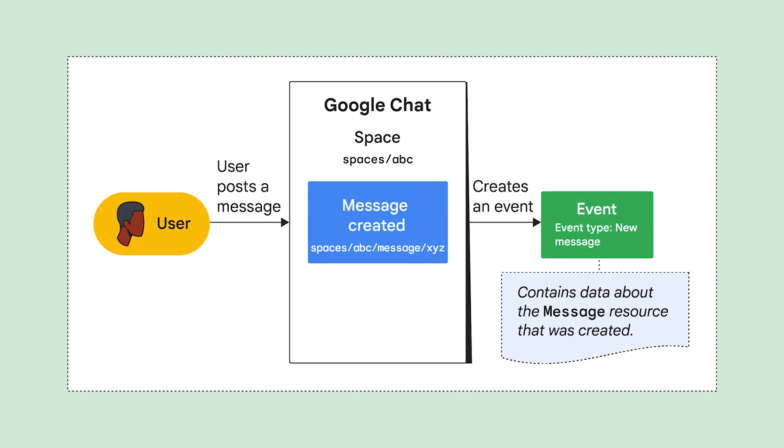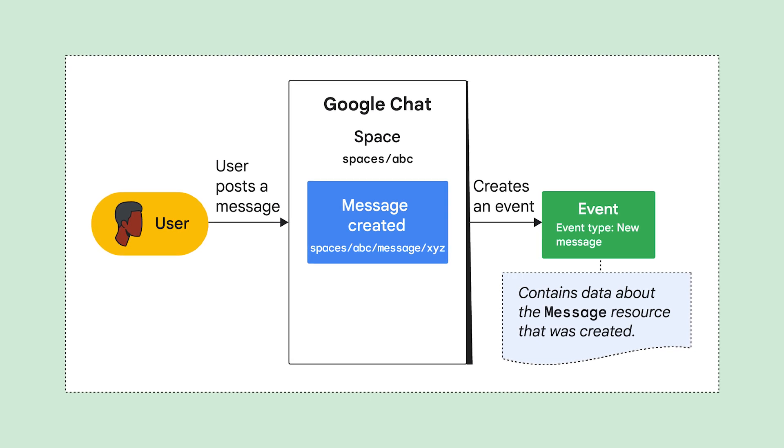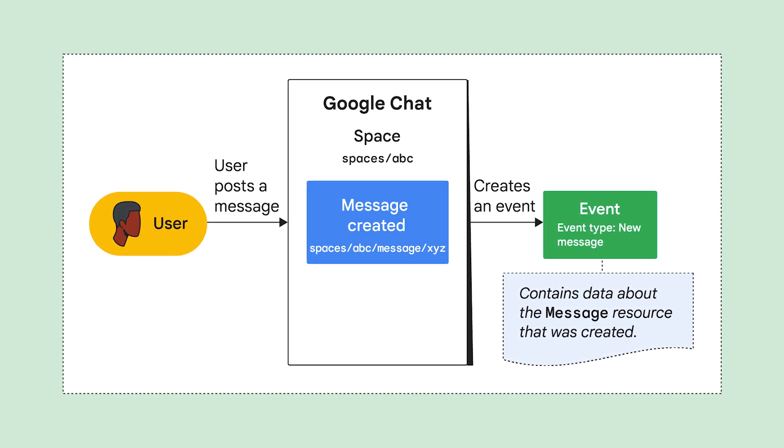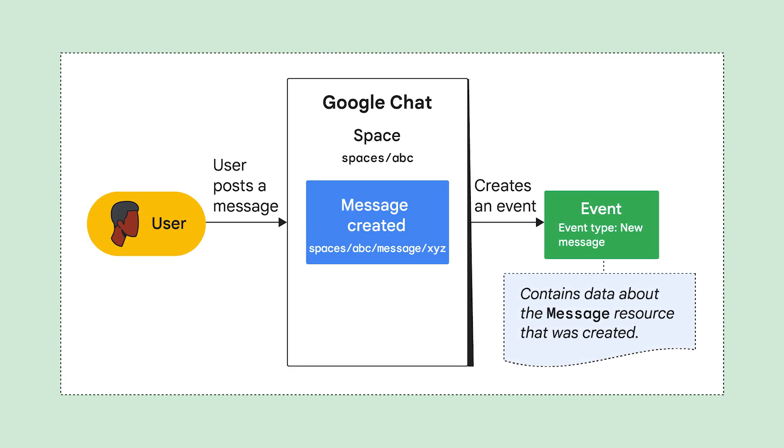Now how does this all work under the hood? Every activity in Google Chat affects a related Chat API resource. For instance, when a user posts a message, a message resource is created. Chat then creates an event that contains data about the new message. Chat categorizes events by type. Event types help you filter and receive only the type of information you need, and let you handle similar activities in the same way.